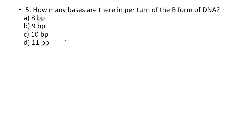How many bases are there per turn of the B form of DNA? Option A: 8 base pairs. Option B: 9 base pairs. Option C: 10 base pairs. Option D: 11 base pairs. The answer is Option C — 10 base pairs per turn.